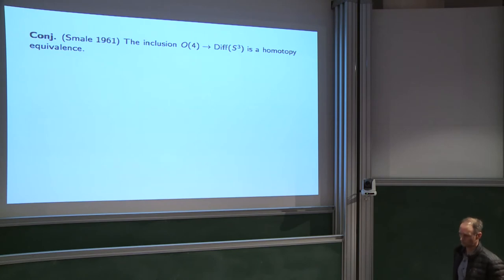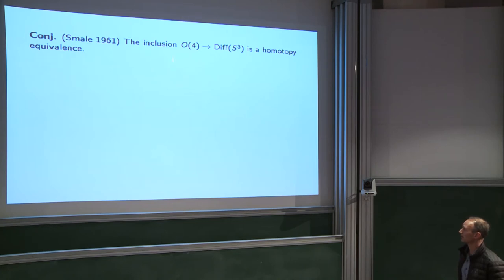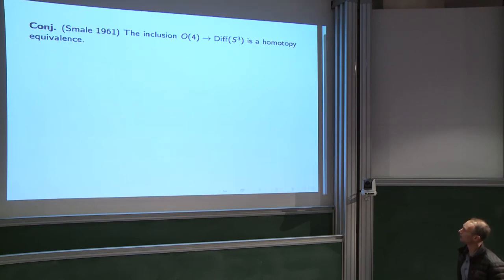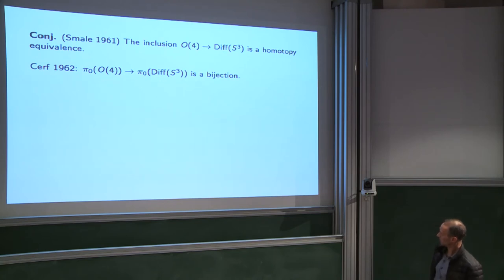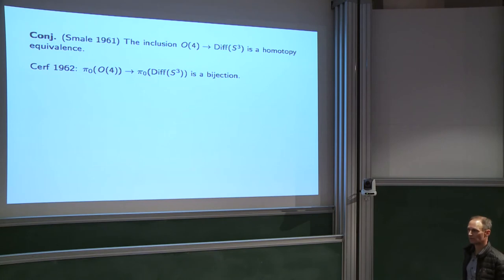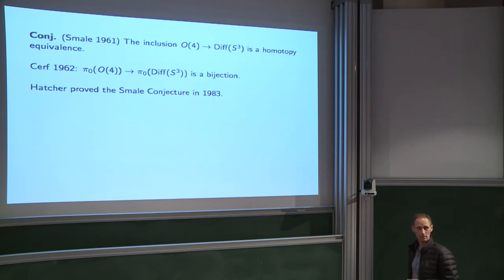Let's go to dimension 3. The first case is the 3-sphere. Smale conjectured in 1961 that O(4) ↪ Diff(S³) is a homotopy equivalence — the analog of what we discussed in dimension 2. A few years later, Jean Cerf showed this is true on the level of path components, i.e., the inclusion induces a bijection on path components. But then little progress was made for something like 20 years, until Alan Hatcher proved the conjecture in 1983.